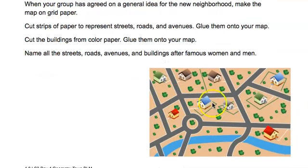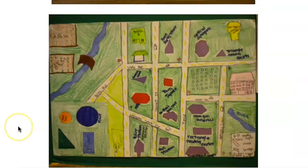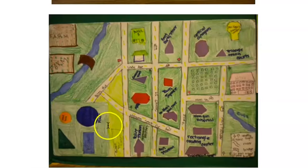Here's an example for some inspiration, but let me show you some student examples as well. In these examples, you can see the parallel roads, the perpendicular road, and the road that intersects, as well as all different types of buildings that fall into the shape requirements.